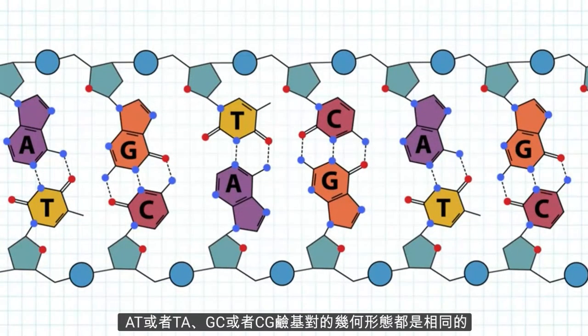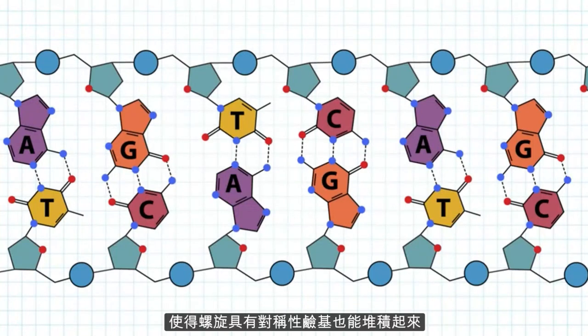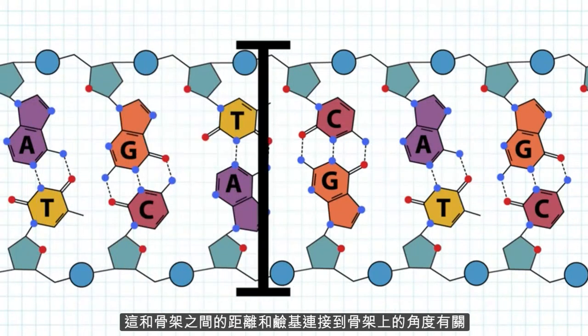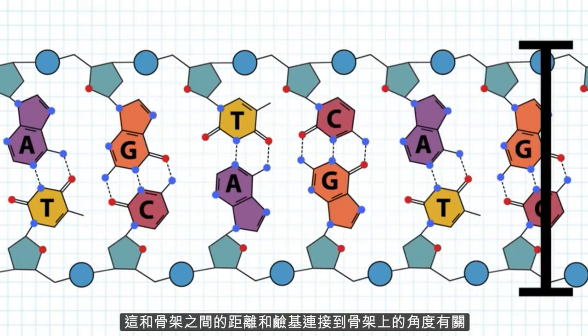The geometry of the AT or TA and GC or CG base pairs is the same, allowing for symmetry and base stacking in the helix. This mostly has to do with the distance between the backbones and the angles to which the base is attached to the backbone.